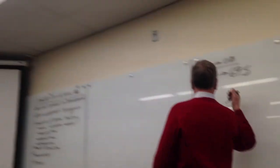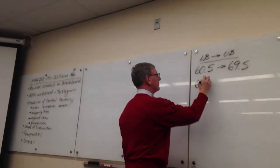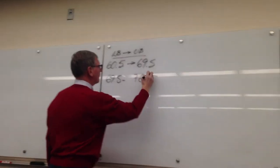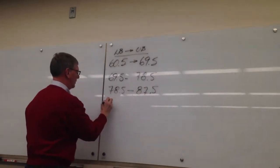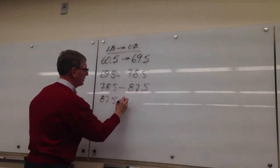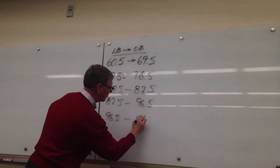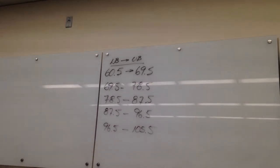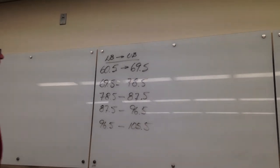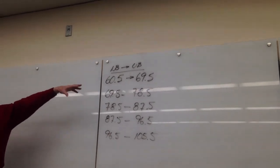So what are the rest of the boundaries? We go 60.5 to 69.5. What's the next one? 69.5 to 78.5, 78.5 to 87.5, 87.5 to 96.5, 96.5 to 105.5. So those are the classes. Those are the boundaries. And so every piece of data that we have has a home.